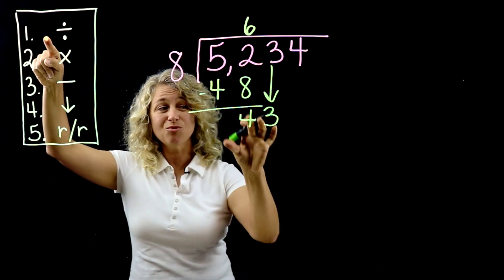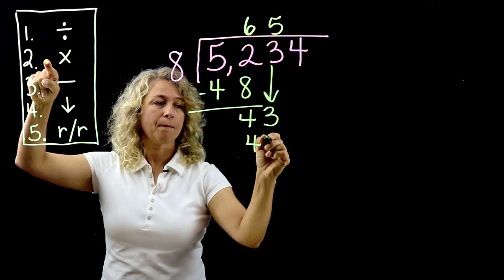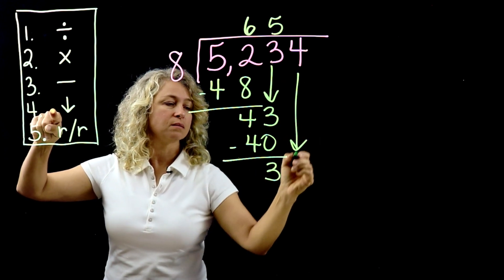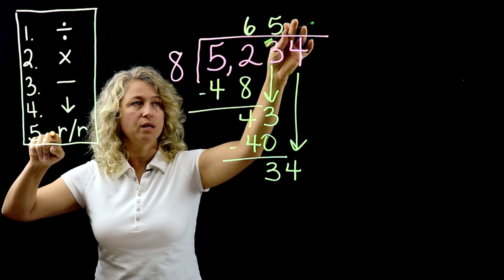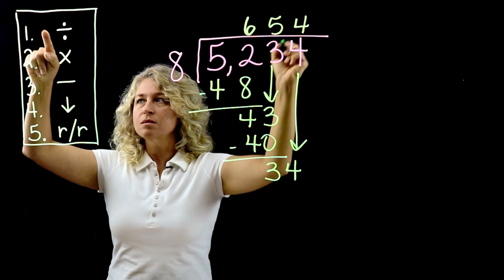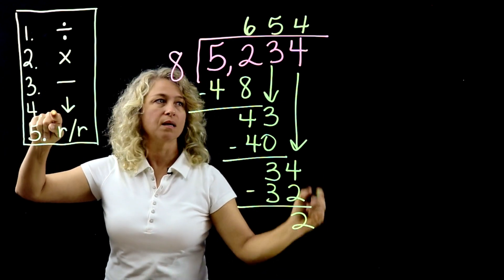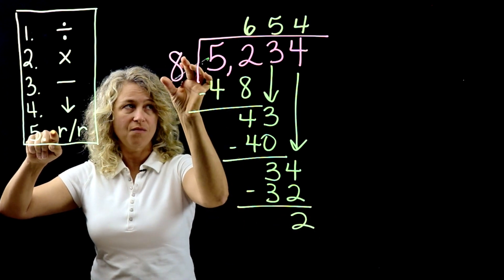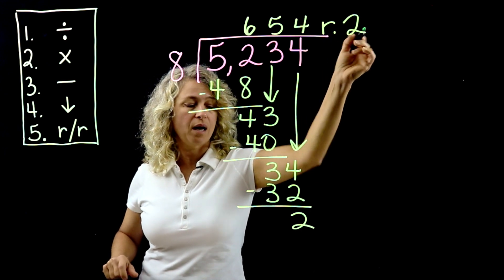8 will go into 43 five times. Multiply, subtract, bring down. Repeat or remainder? Now continue because we need a number up here. 8 goes into 34 four times. Multiply, subtract. Nothing else to bring down. Repeat or remainder? It's smaller than the divisor. We have a number above each number. We know we're finished.